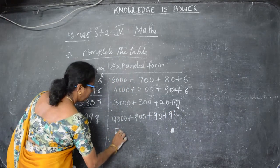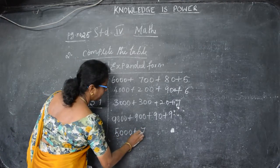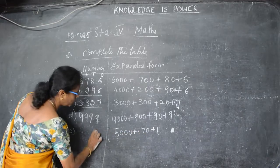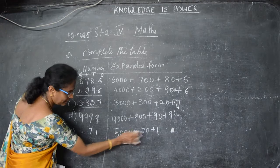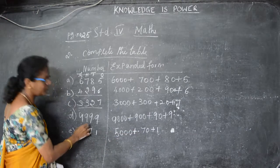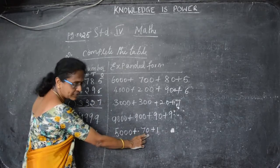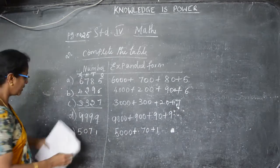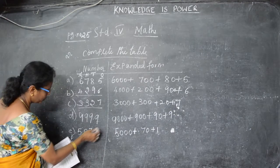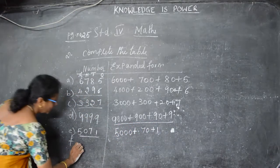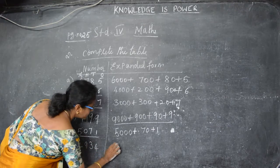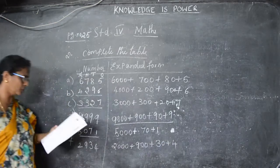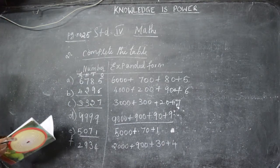Here they are given 5,000 + 70 + 1. Ones place is 1, tens place is 7 (70), hundreds place has no number so you put 0, thousands place is 5. The number is 5,071. Understand children? Next, F sum: 2,000 + 900 + 30 + 4. So 2 in thousands place, 9 in hundreds place, 3 in tens place, 4 in ones place — the number is 2,934. So this is the expanded form for completing the table.